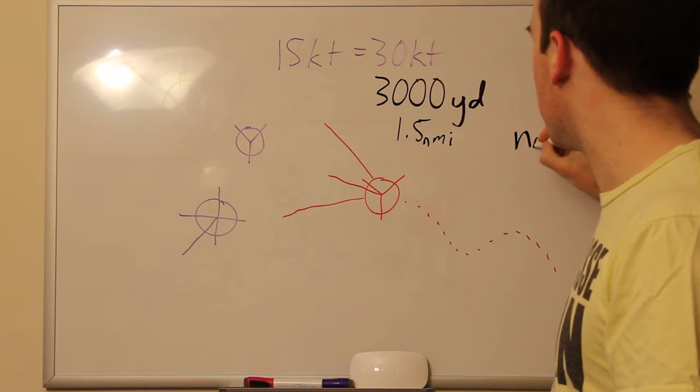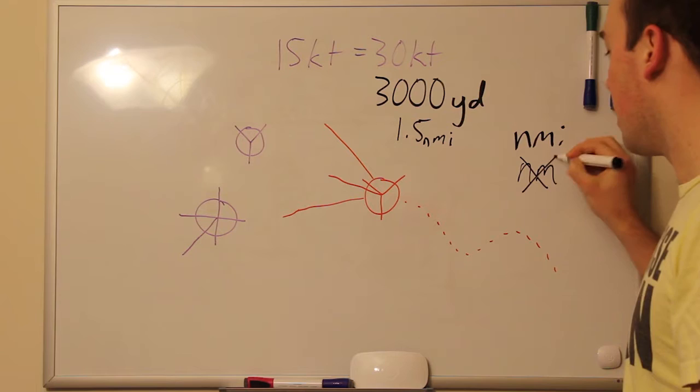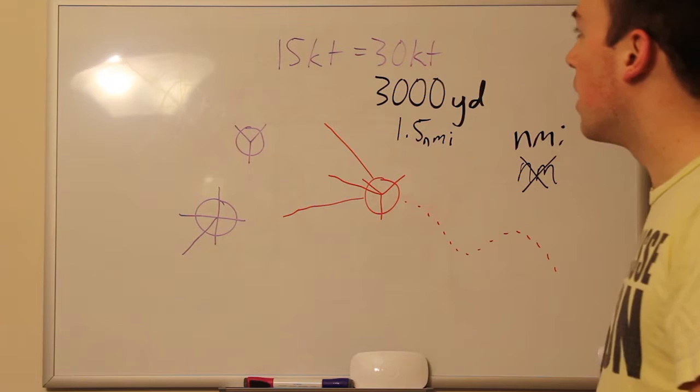Side note, when writing nautical miles, make sure to do NMI and not NM. NM is nanometers, so do NMI. That's nautical miles.